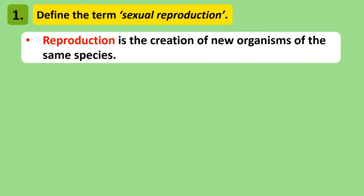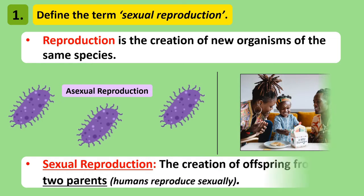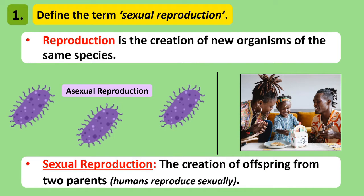Reproduction is the creation of new individuals of the same species. All living things have the ability to reproduce so that they don't become extinct, although the way they reproduce can vary from organism to organism. In our video on microorganisms, we discuss asexual reproduction, but for this topic we focus solely on reproduction in humans. The method that humans use to reproduce is called sexual reproduction, which is the creation of offspring from two parents.